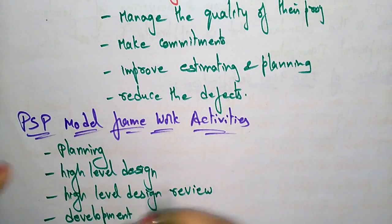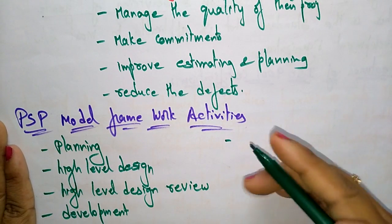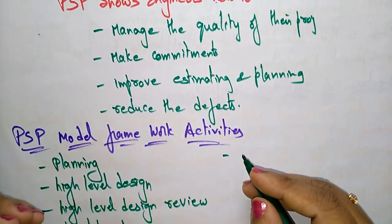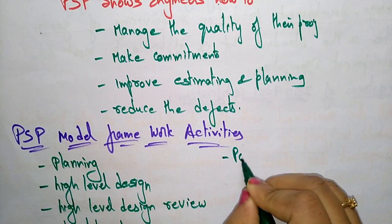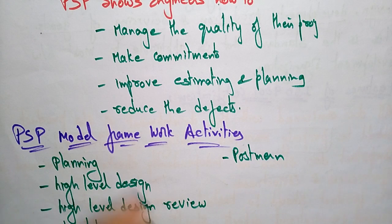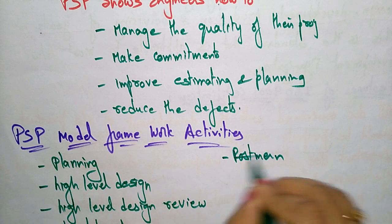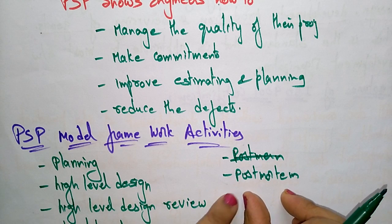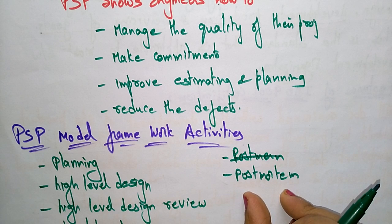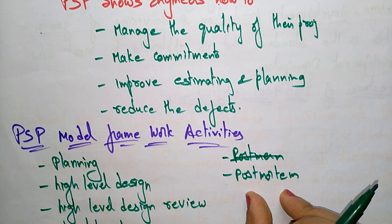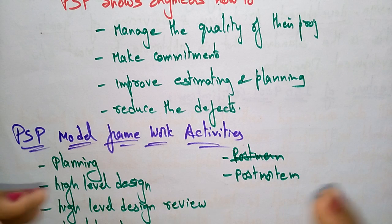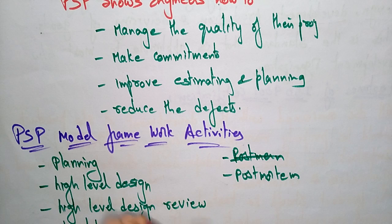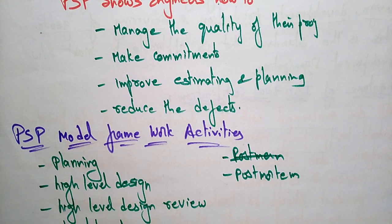The last stage in the Personal Software Process model is Post Mortem. In Post Mortem, the measures and metrics collected throughout the process are used to determine and improve the effectiveness of the process. It is essentially the final output stage.